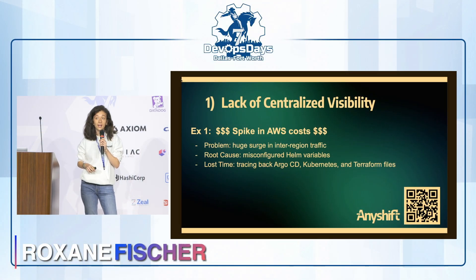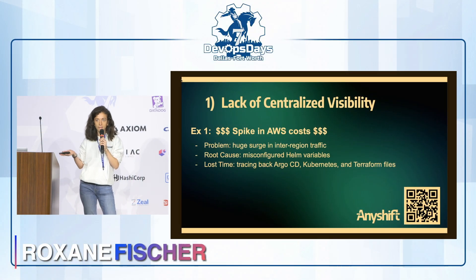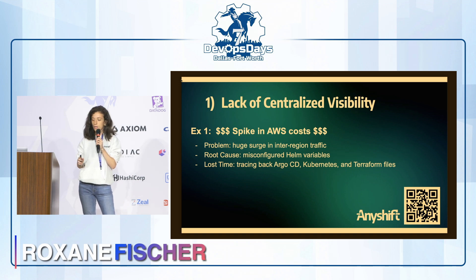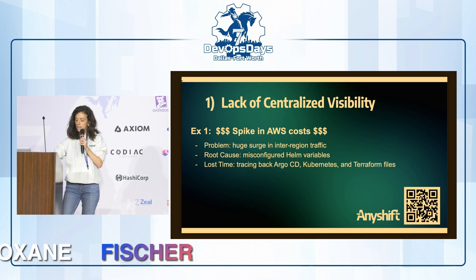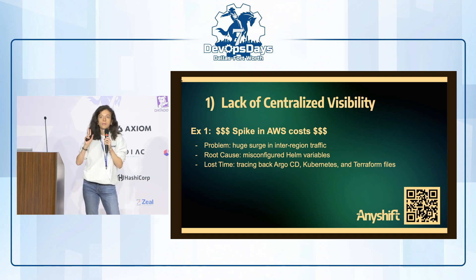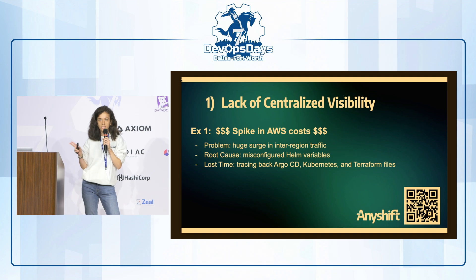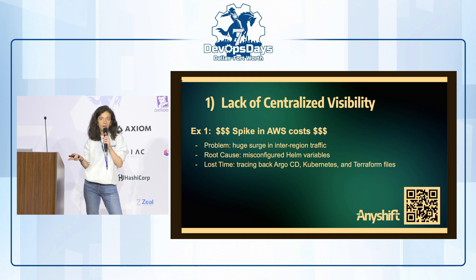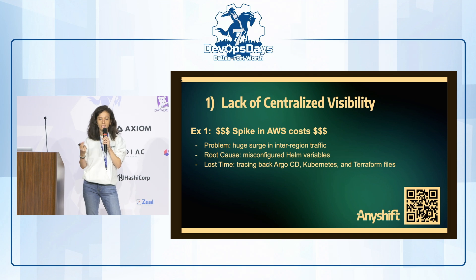The first reason is what we saw when speaking to different clients. You still have a lack of centralized visibility within your infrastructure — lack of visibility between cloud resources, Kubernetes resources, data ones, and providers such as DNS, Cloudflare, etc.